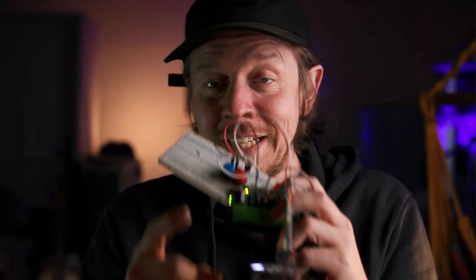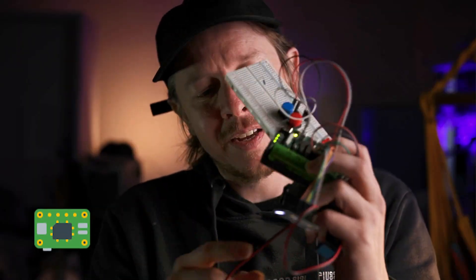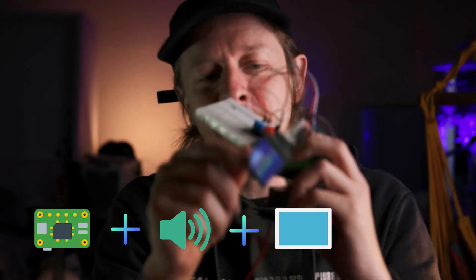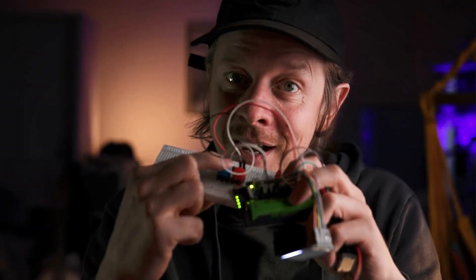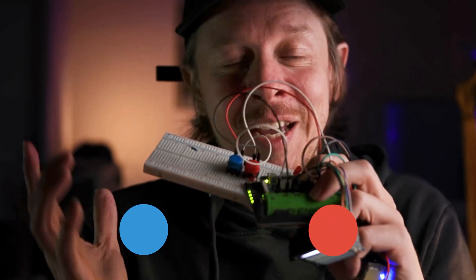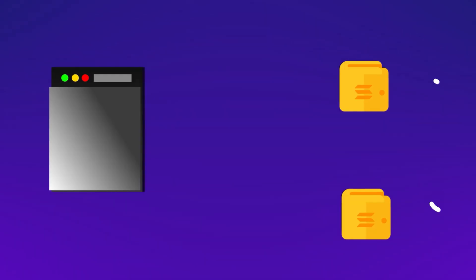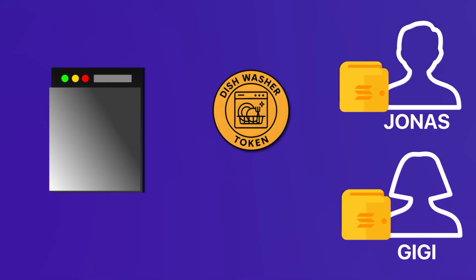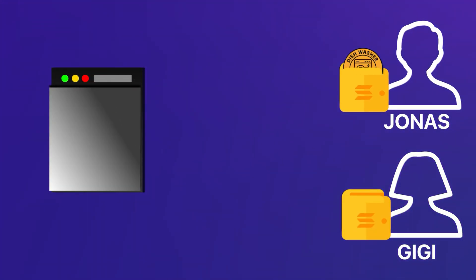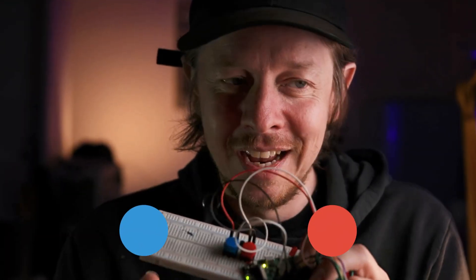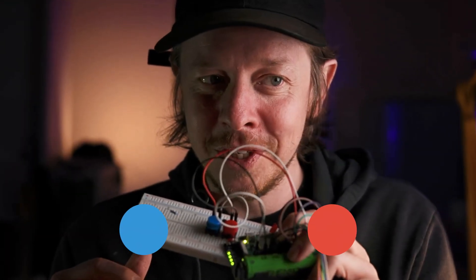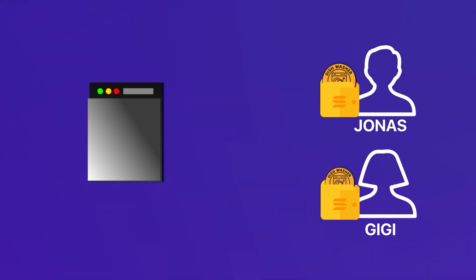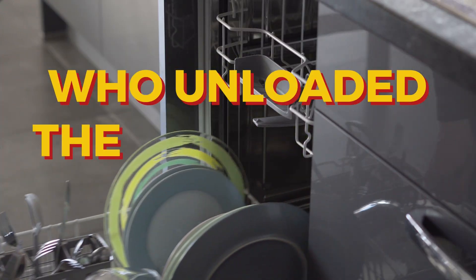I've built a little device here. It's a Raspberry Pi connected to a speaker, a display, and two buttons. Whenever I unload the dishwasher, I press my button — it plays a nice little ka-ching sound and automatically mints a dishwasher token into my Solana wallet. If my girlfriend unloads the dishwasher, it plays a nice little sound and she gets a token. Like this, we can cheat-proof figure out who unloads the dishwasher the most.